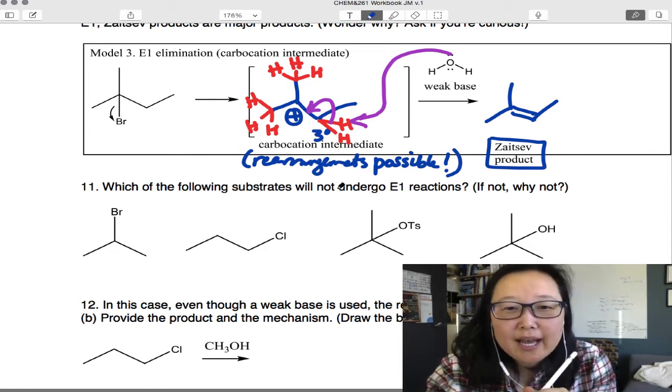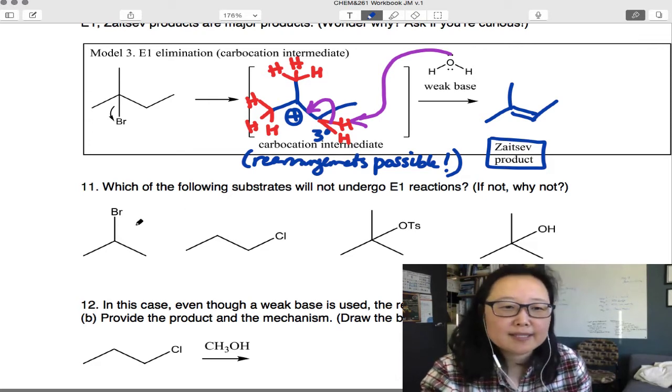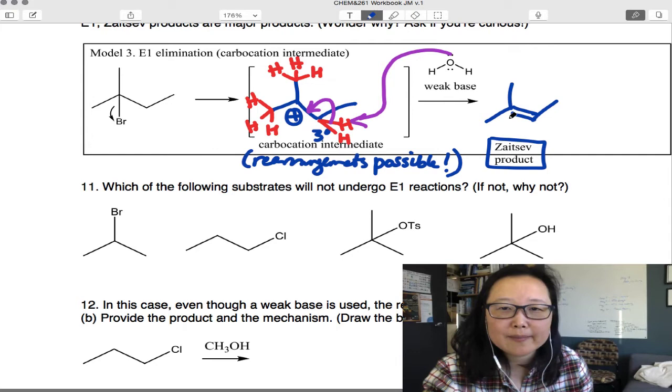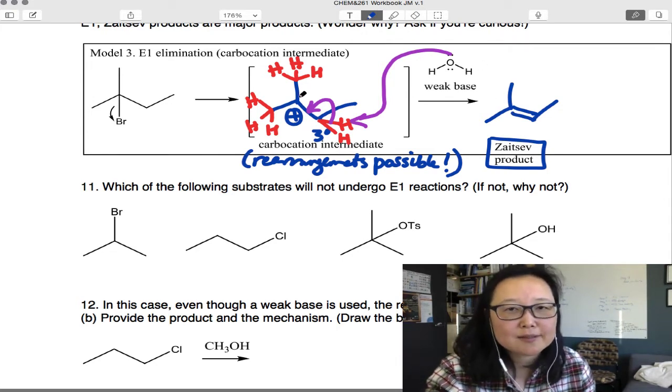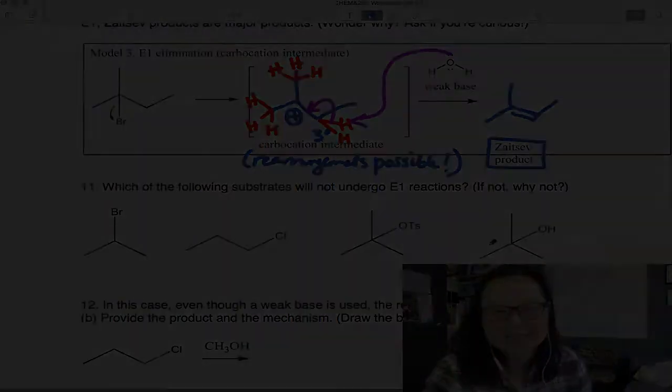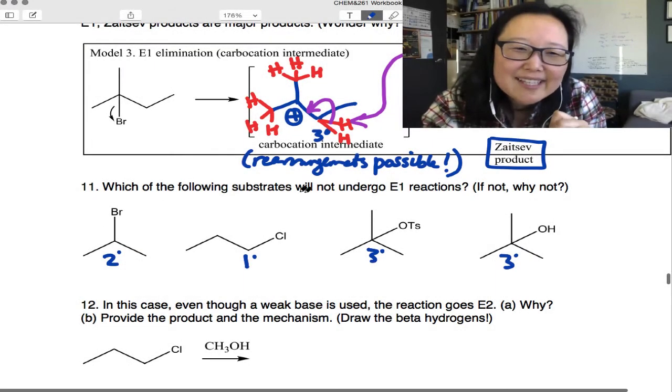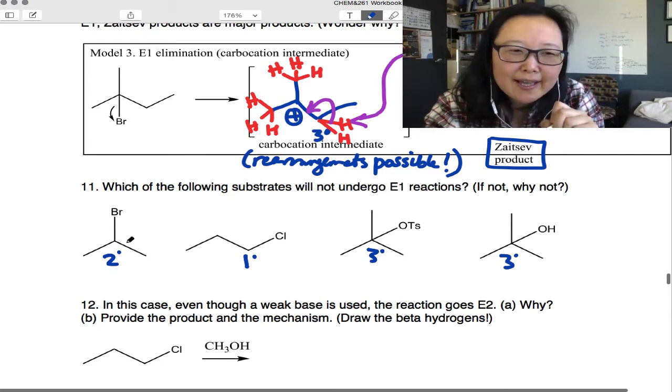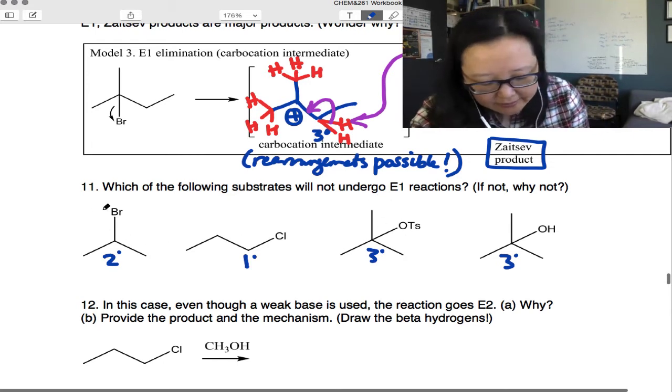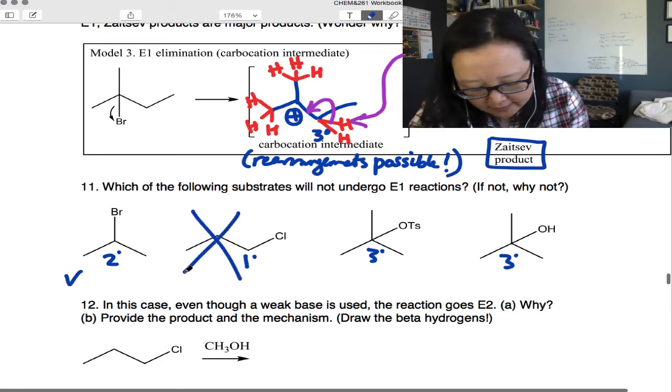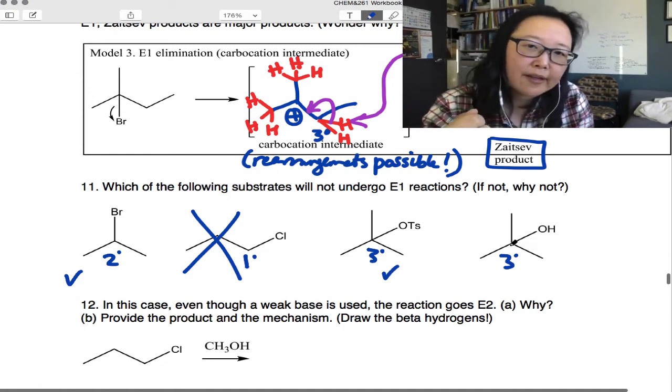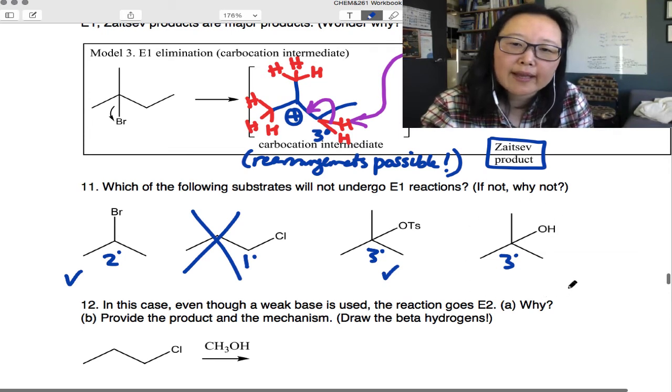Which of these substrates will not undergo E1 reactions? So let's take a look at E1's mechanism—it goes through a carbocation intermediate. So see if you know which of these would be likely to go through a carbocation intermediate. Of all of these, this is probably the best one is tertiary. But secondary could also occur. Primary I would cross out. Will not undergo E1. Tertiary is okay for E1. And then this last one is tertiary, so it should be okay for E1. But do you see why it won't be?